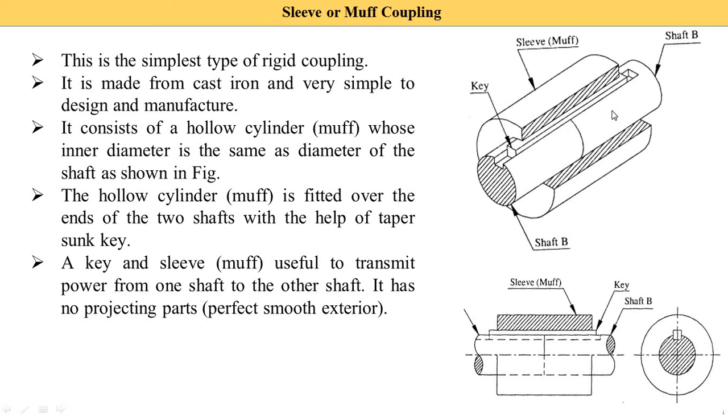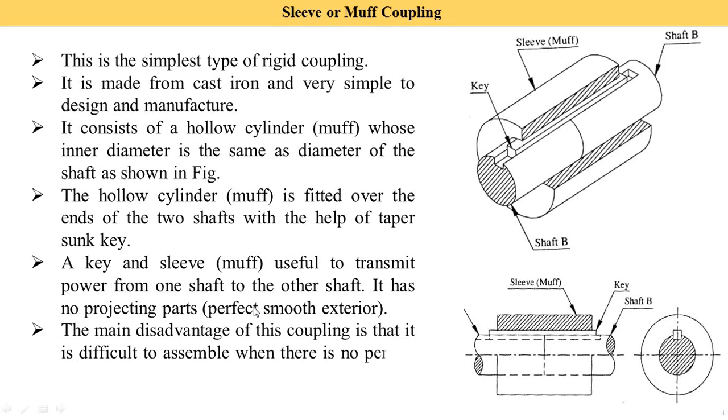The main disadvantage of this coupling is that it is difficult to assemble when there is no perfect alignment between the shafts. If there is a slight misalignment between the two shafts, we are not able to use the sleeve or muff coupling. To use sleeve and muff couplings, we require perfect alignment between the two shafts.